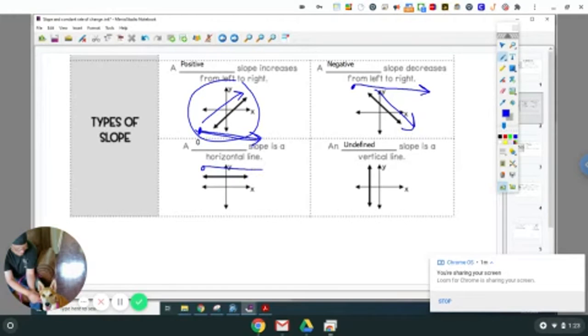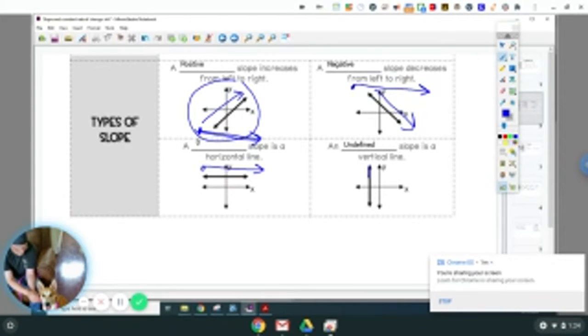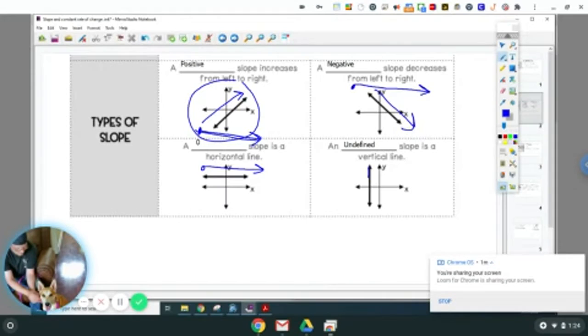Here, your slope literally does nothing, and it has a slope of zero. Here, your line is vertical. When your line is vertical, it's called undefined, means there is no slope.